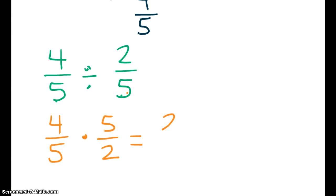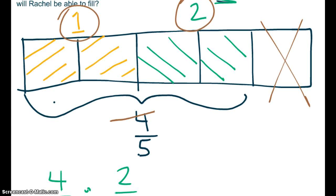Multiply straight across. And you get 20 tenths. And 20 divided by 10 is 2. So how many mugs? 2 mugs. And that matches 2 mugs.